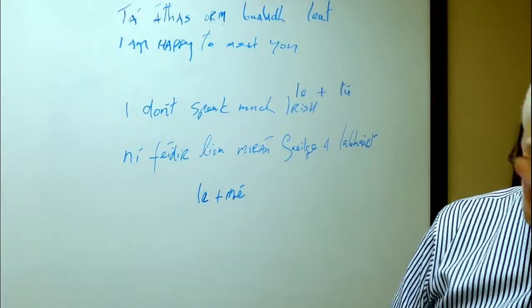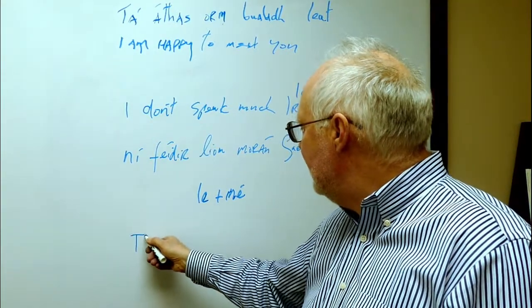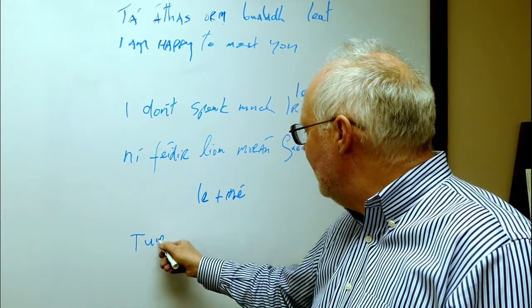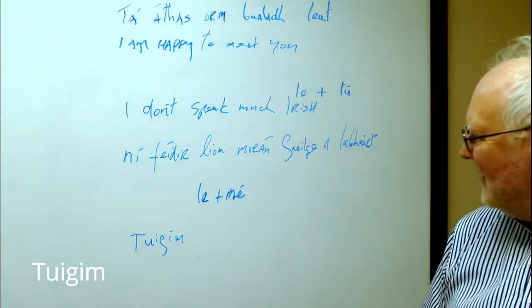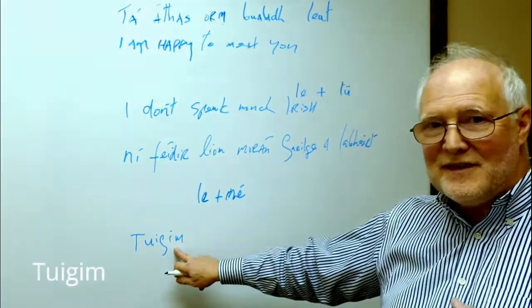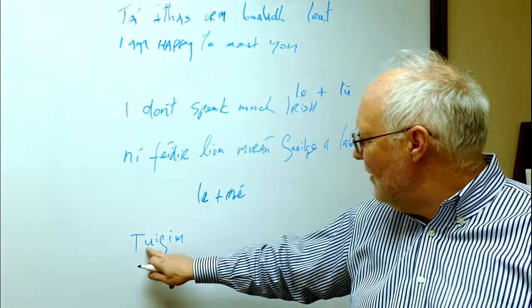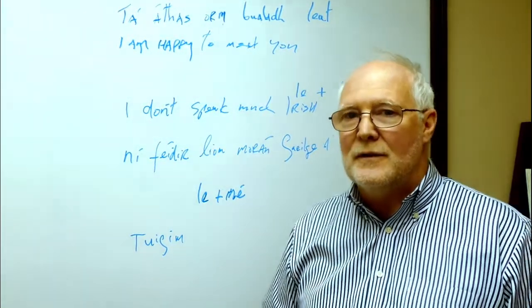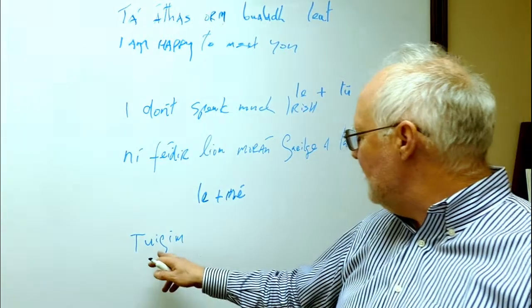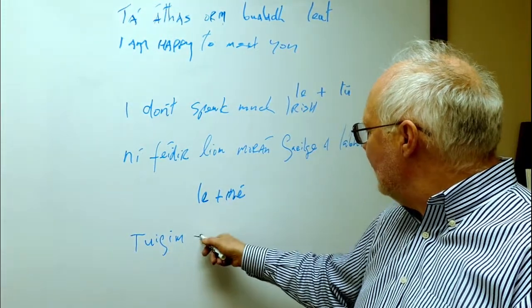If you want to say I understand, that's one word. Figum. I understand. And you know because of the M it means me. Figum. The U is not pronounced. It tells you to make the T broad. Figum. It's not a figum. It's figum. And the M is slender. The G is slender. It's that I understand.